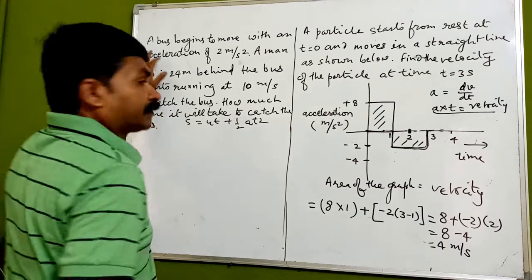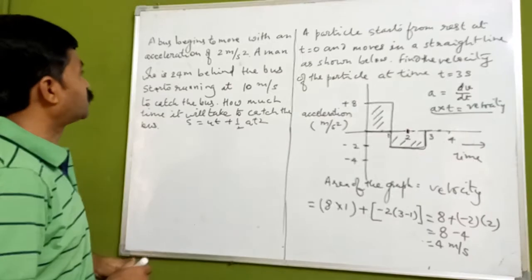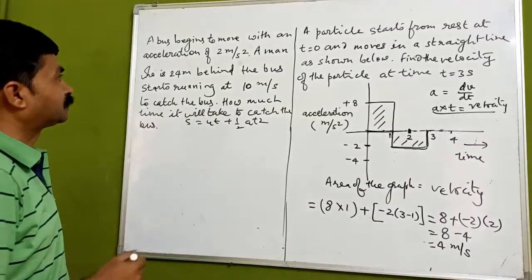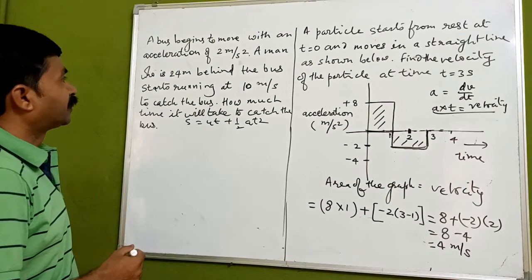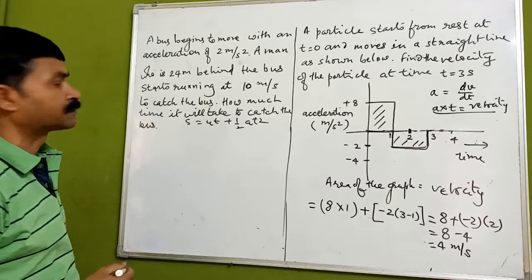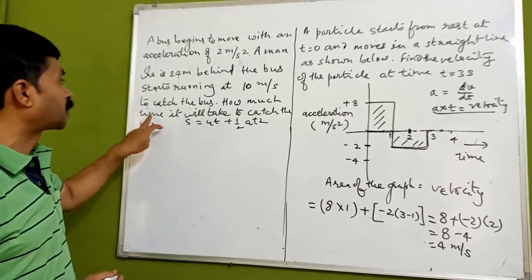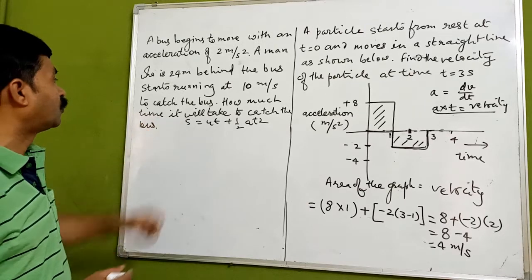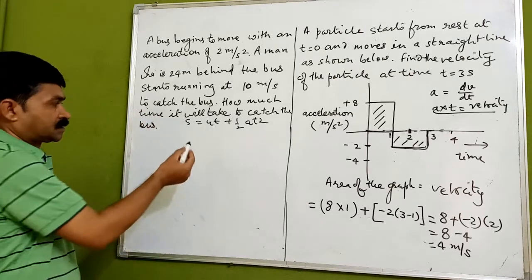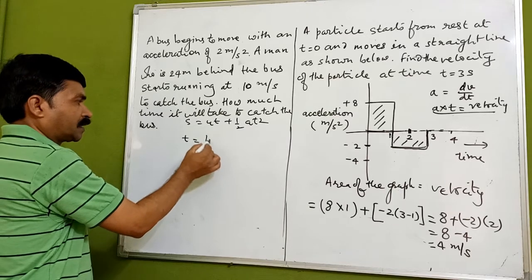Now we have another question. A bus begins to move with an acceleration of 2 meter per second squared. A man who is 24 meters behind the bus starts running at 10 meter per second to catch the bus. How much time will it take to catch the bus? We need to find the time taken.